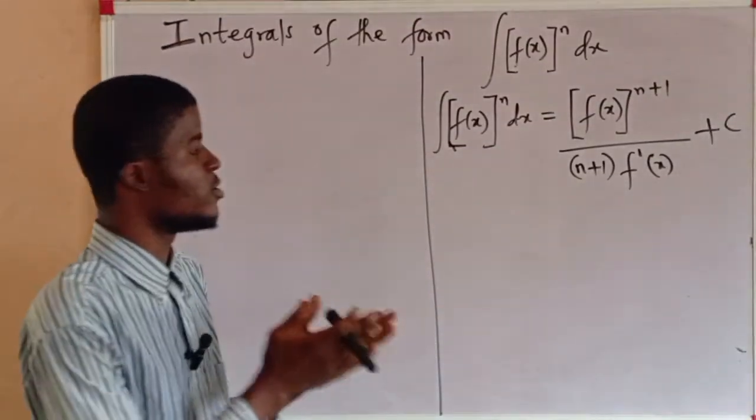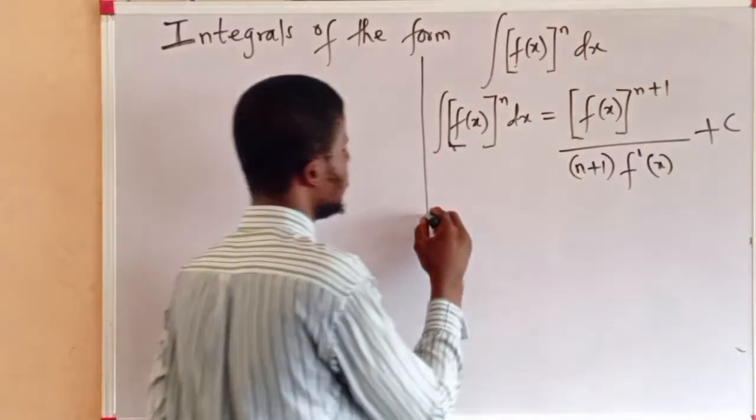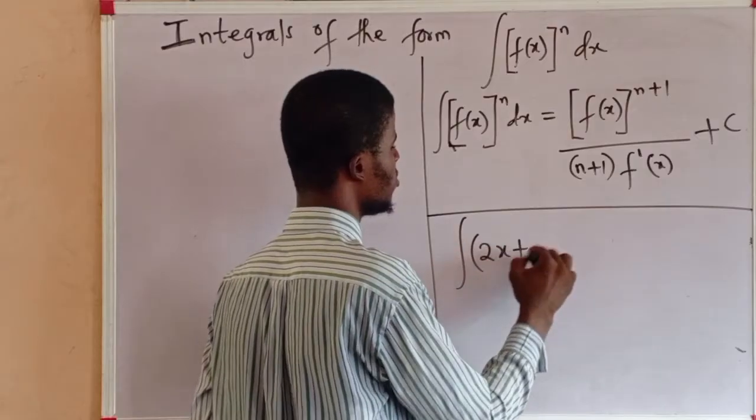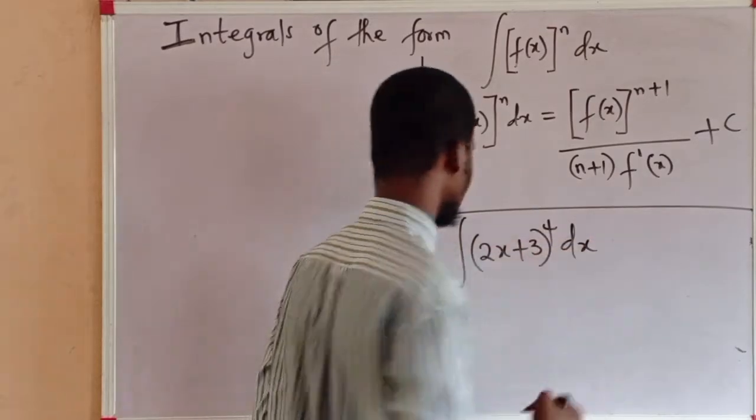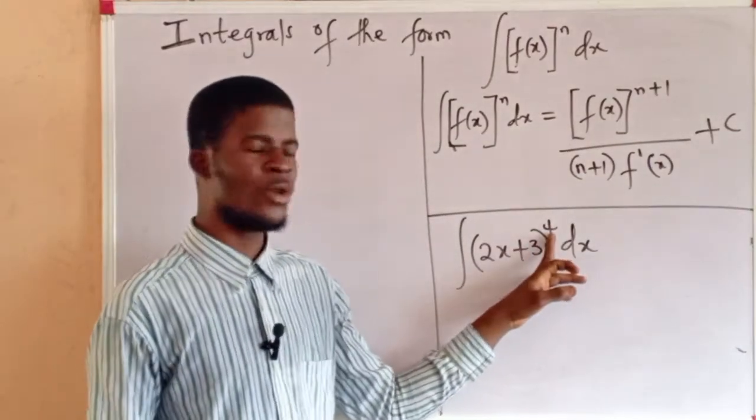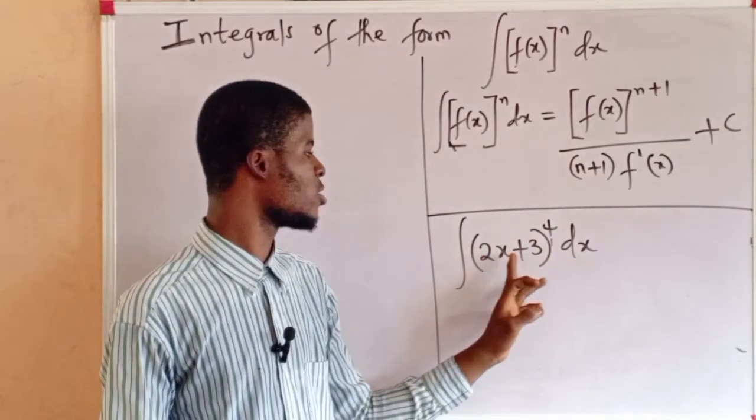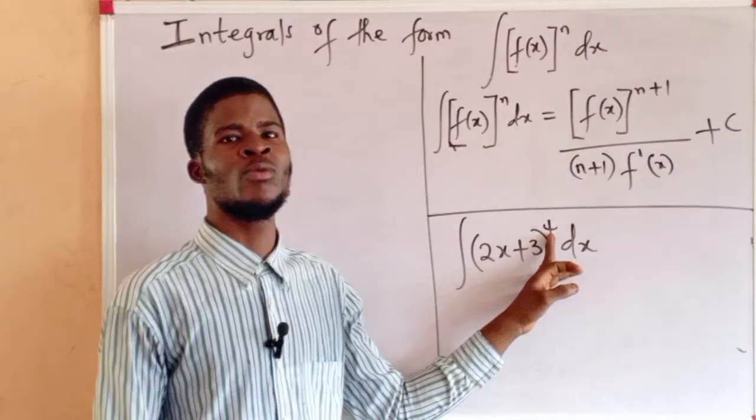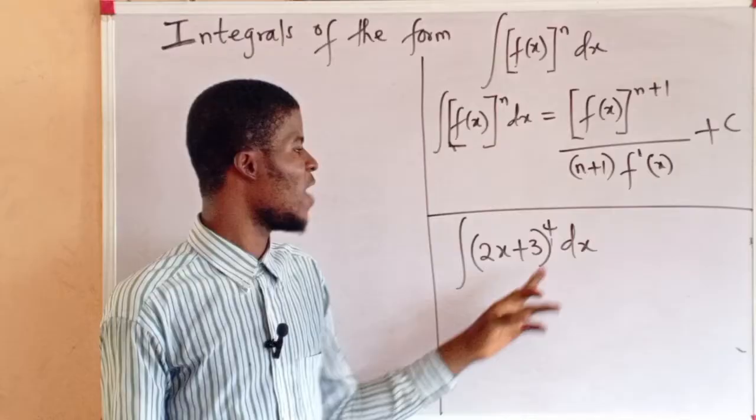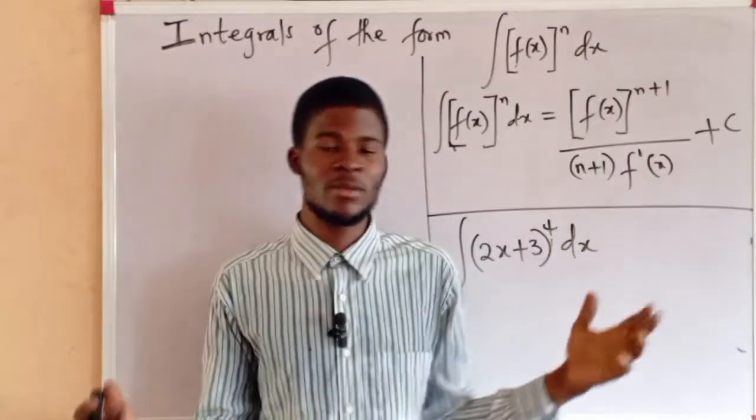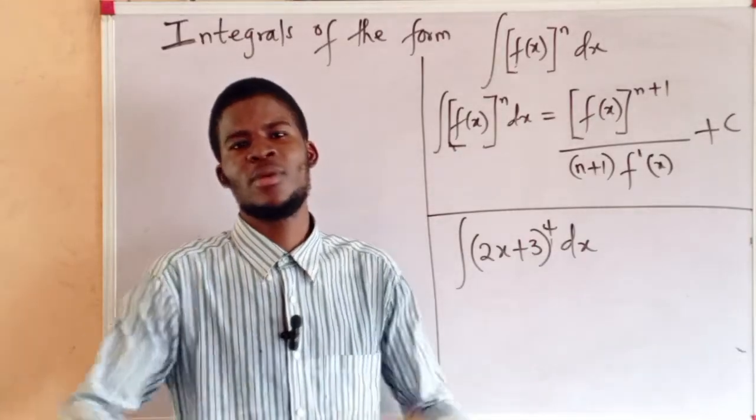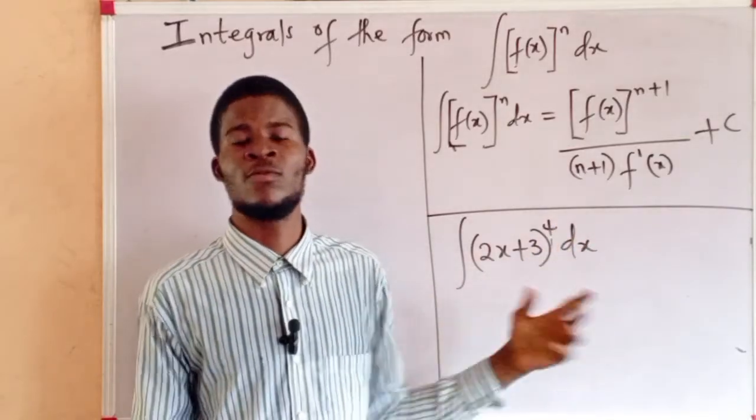Now, let us apply this to solve a problem. What would be the integral of 2x plus 3 all to the power of 4 dx? Now, check something. If this power were to be 2, if we had 2x plus 3 all to the power of 2, we could just expand easily. But we are having the power of 4 here. 4 is bigger than 2, so we can't actually stand the stress of expanding this polynomial with a degree of 4.